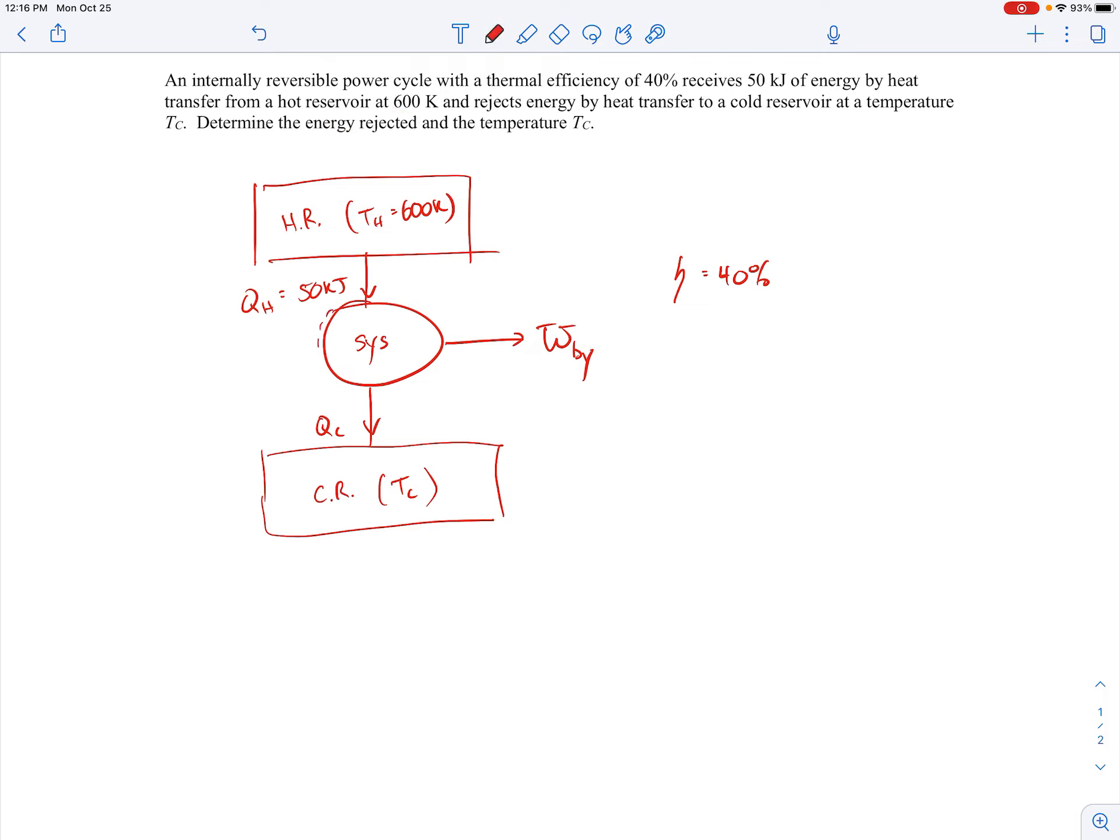And so let's go ahead and first determine the energy rejected. That will be a matter of applying the first law to a control volume surrounding the system. So we're told that the efficiency of the power cycle is 40%. What that means is that the net power that we get out over the cycle divided by the heat that we put in, the QH, is equal to 0.4. So the W by would be 0.4 times QH.